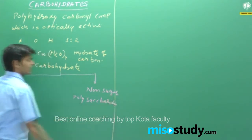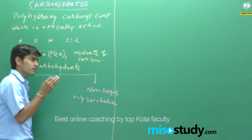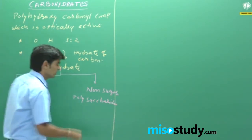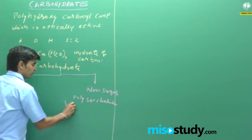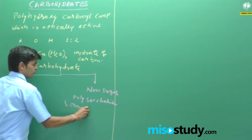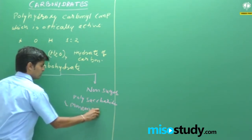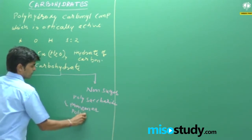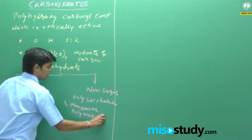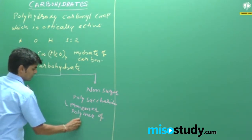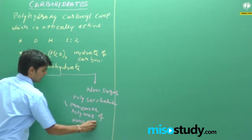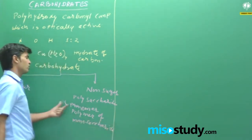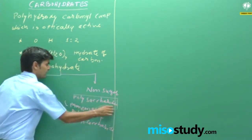Polysaccharides — what are they? They are carbohydrates which are made of small-scale monomer units.